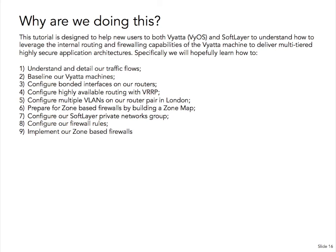Equally, how you configure high availability with VRRP. Then configuring multiple VLANs on the router pair within London. We're going to cover preparing for zone-based firewalls — a little bit more around the actual traffic flows and making sure we're prepared to create all of those zones. Then we're going to configure all of the private network groups, configure all of the firewall rules for all our different firewalls per VLAN based on our zone map, and then implement the zone-based firewalls. We're going to be covering rather a lot of ground in this tutorial, and I hope it's of use to people to get a deeper understanding of how you can set your routers up within SoftLayer and get the traffic flowing the way that you want.